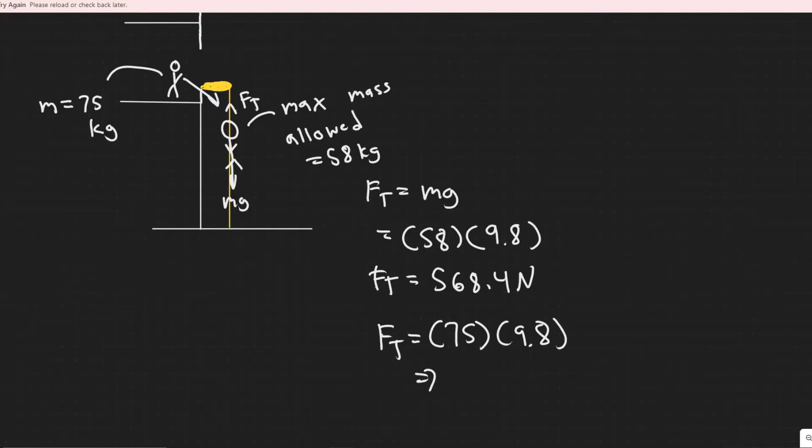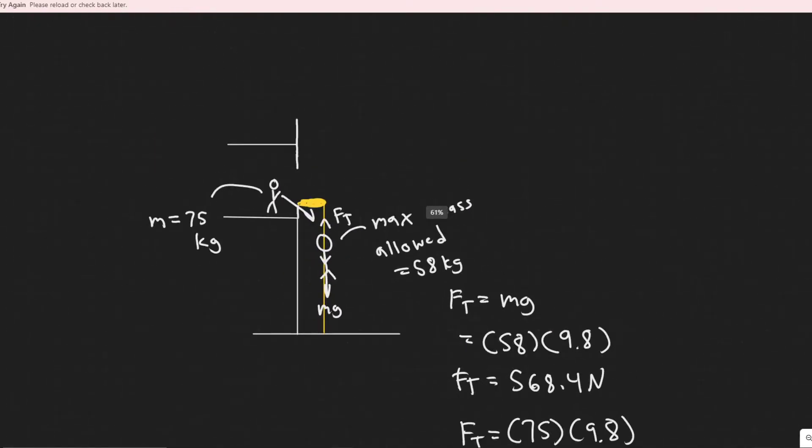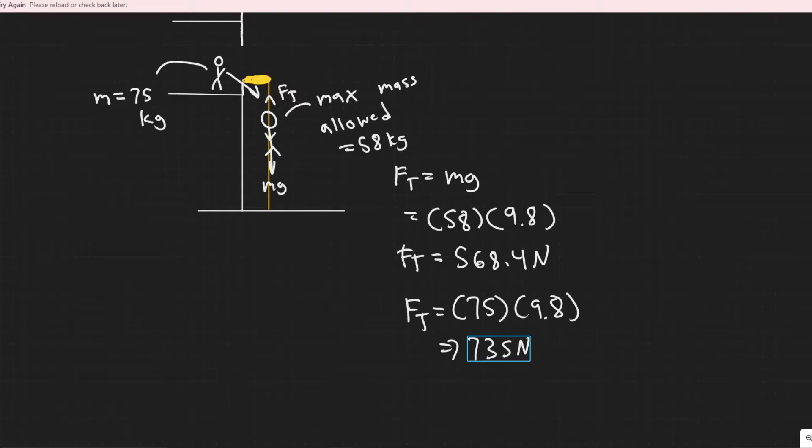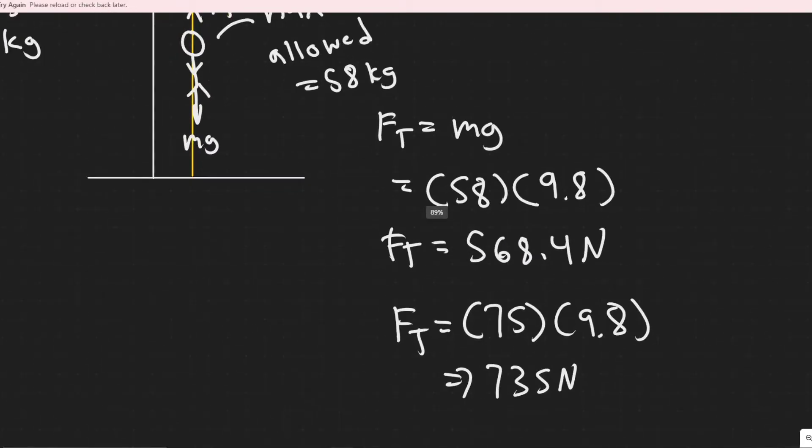So notice the discrepancy there, we need 735 newtons of tension. That's how much we need the cable to at least be able to hold, or else it will break if our person gets on it. But it only actually allows 568.4 newtons right before it breaks.